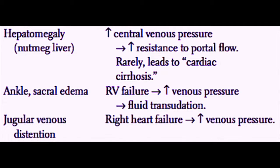They may also develop hepatomegaly from passive congestion of the liver, also known as nutmeg-type liver. This is due to increased central venous pressure from right-sided heart failure, which causes increased resistance to portal flow and may also cause liver failure, called cardiac cirrhosis. Over time, left ventricular failure causes right ventricular failure, and that right ventricular failure with elevated pulmonary pressures leads to increased systemic venous pressures, which cause lower extremity and sacral edema. This elevated right ventricular pressure will also eventually cause jugular venous distension.